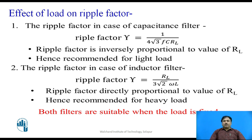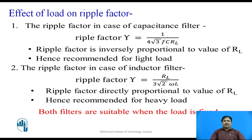We can also use an inductor to provide better ripple reduction. The ripple factor for the inductor filter is defined as the ratio RL upon 3√2·ω·L. In this case, ripple is directly proportional to the value of load, so the ripple is very low when the value of RL is very small. We say that this inductor filter is suitable for a heavy load.